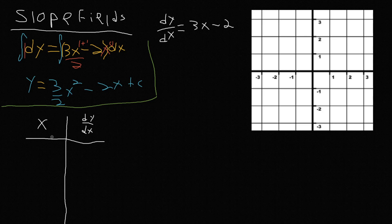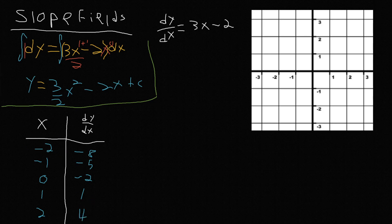So we're going to start at negative 2, go to negative 1, 0, positive 1, and then 2. Now we're going to substitute all of these back into our original equation. So at x = -2: negative 2 times 3 is negative 6, minus 2 is negative 8. At x = -1: negative 3 minus 2 is negative 5. At x = 0: 0 minus 2 is negative 2. At x = 1: 3 minus 2 is 1. And at x = 2: 6 minus 2 is 4. So now we have our slopes.